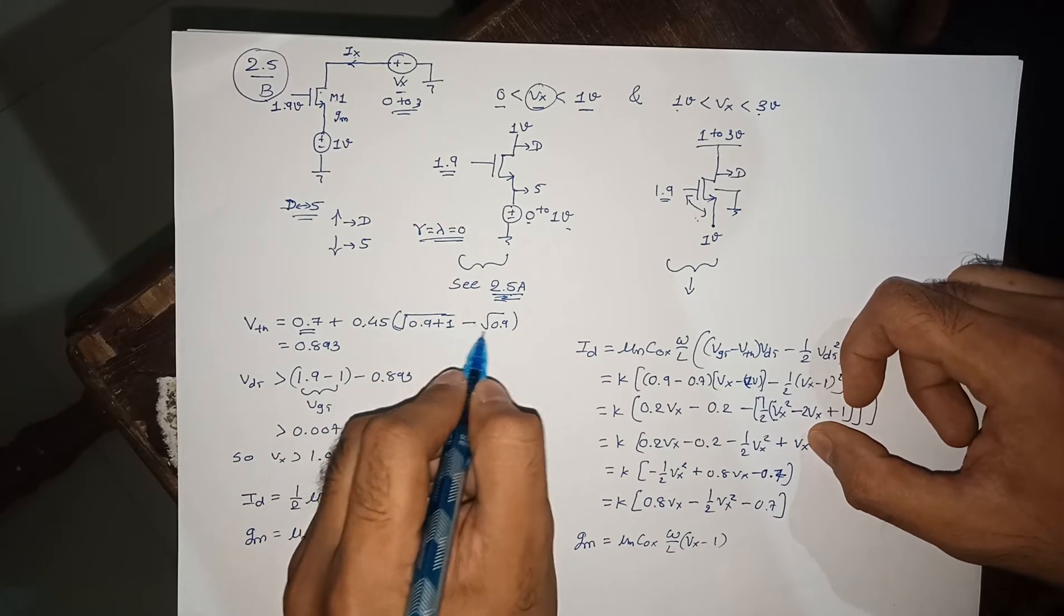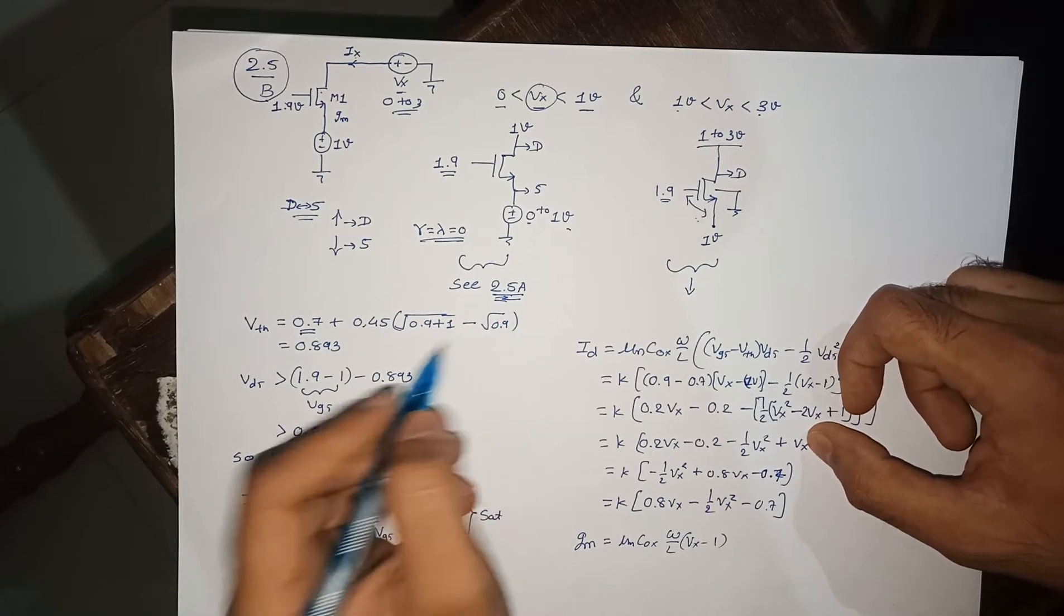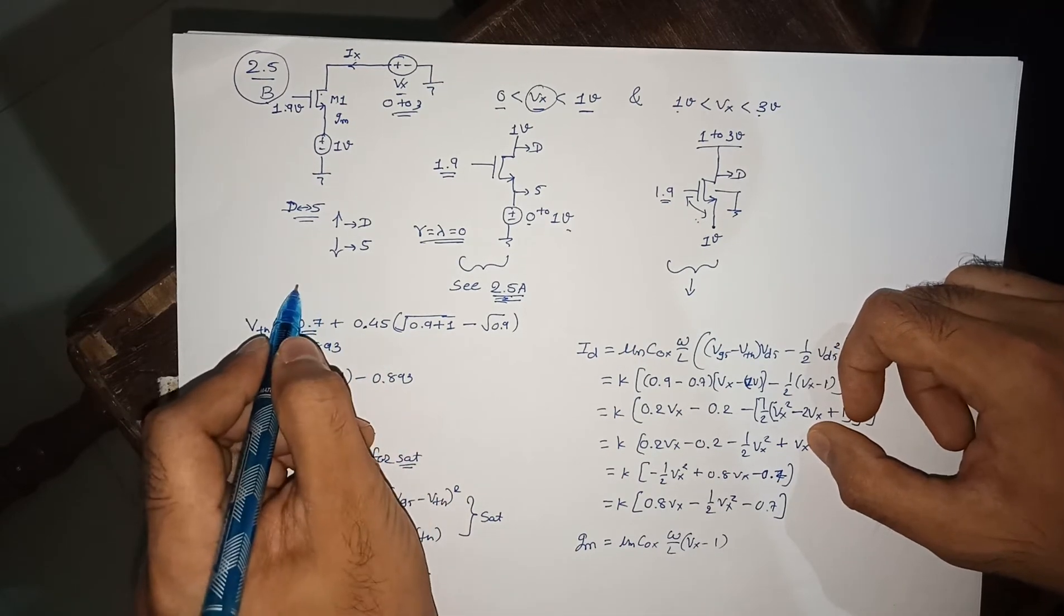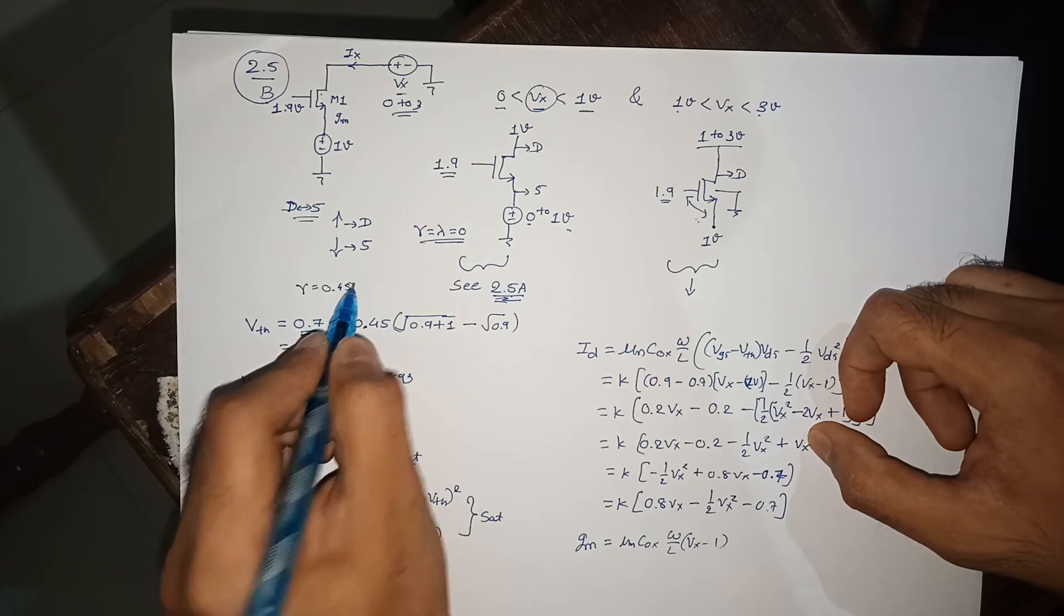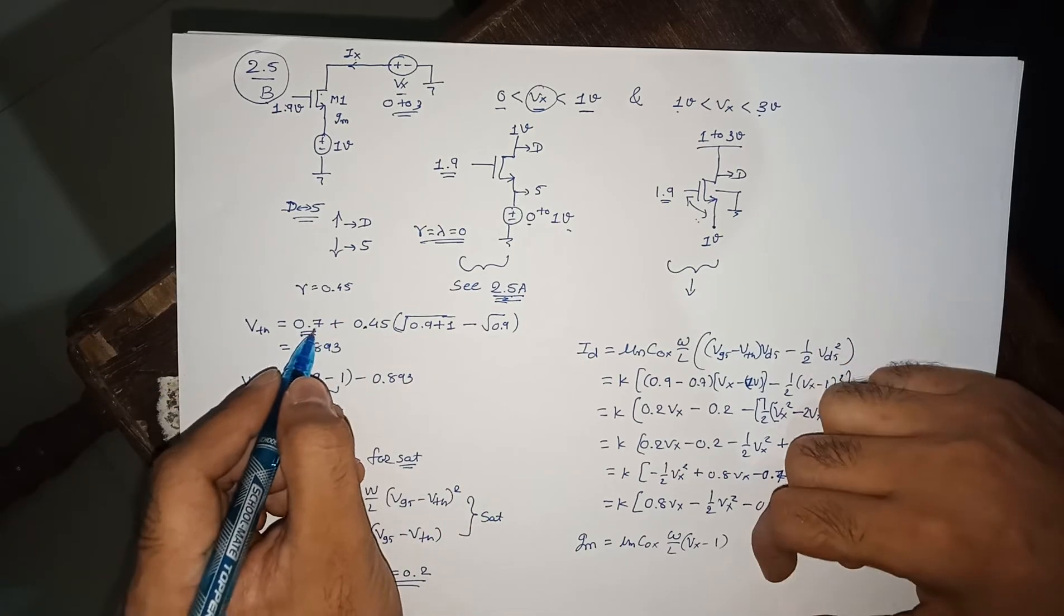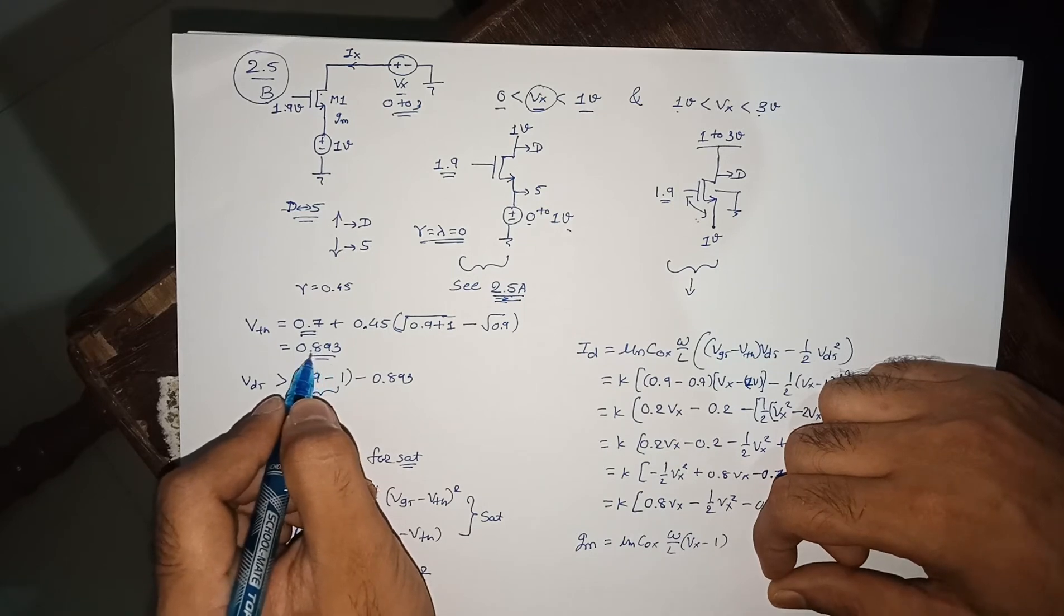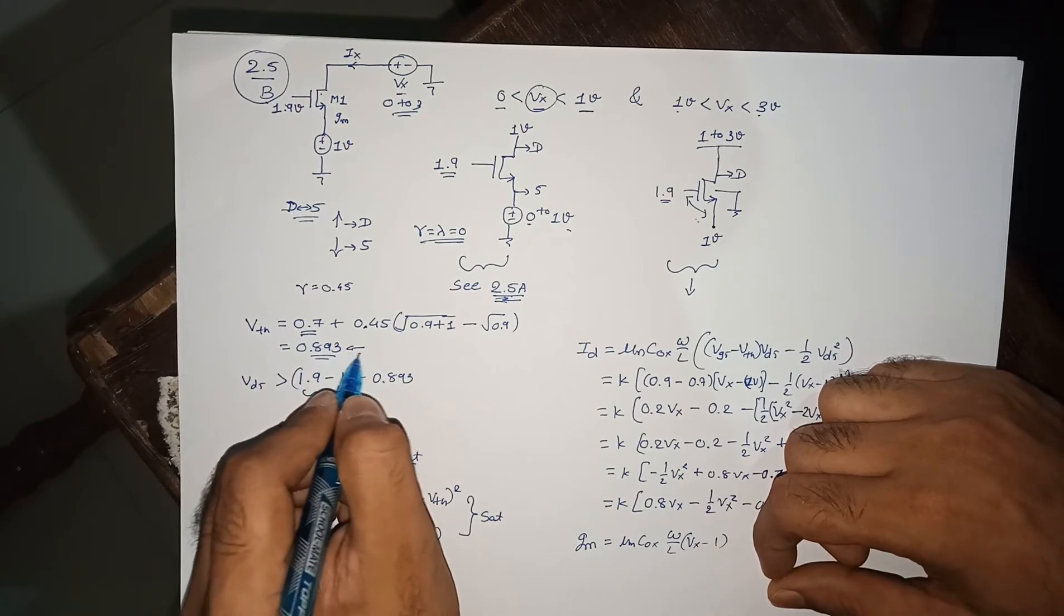Gamma is 0.45 from table number 2.1. You can get 0.7 plus this value, which will be 0.893. Just cross-check it once again from your side.